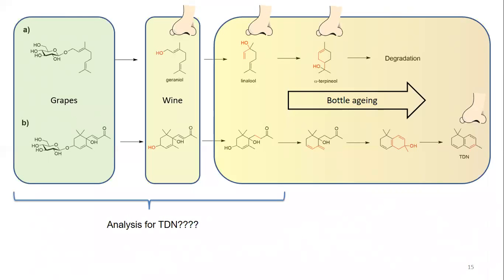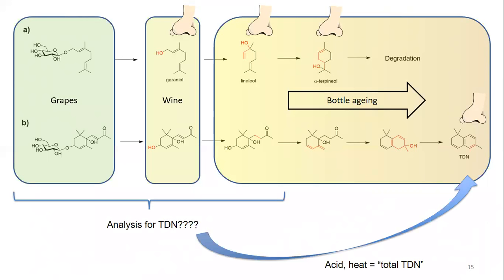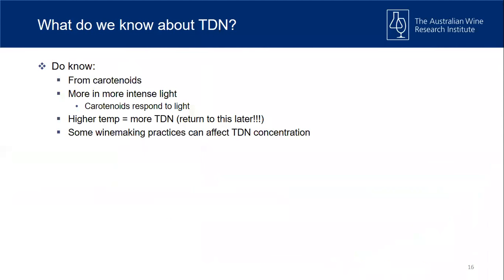An important analytical point: in young wine or grapes, there is no free TDN to measure. What we do is take young wine or grape juice, increase the acid, drop the pH, and heat it up — we force TDN formation, analyze for it, and call it 'total TDN.' It's not the amount free in the wine you can smell; it's a measure of promised TDN — what will happen down the track.